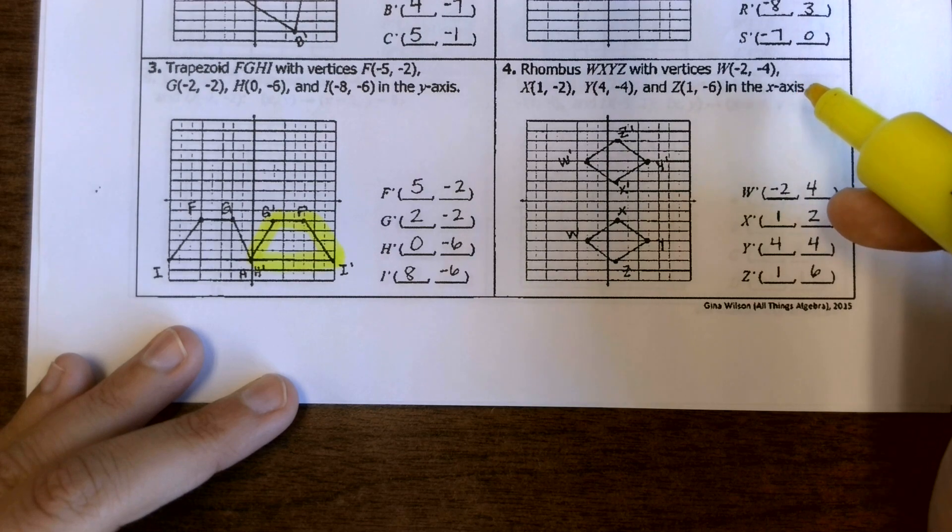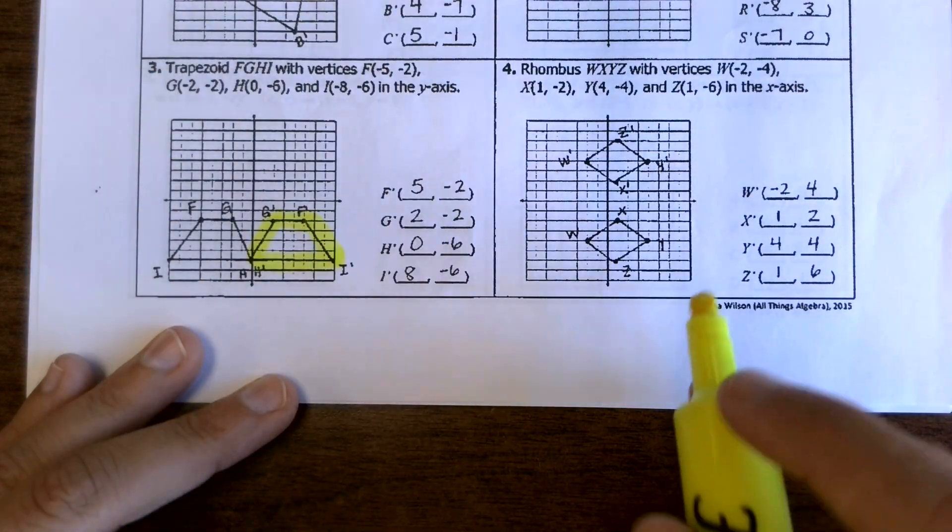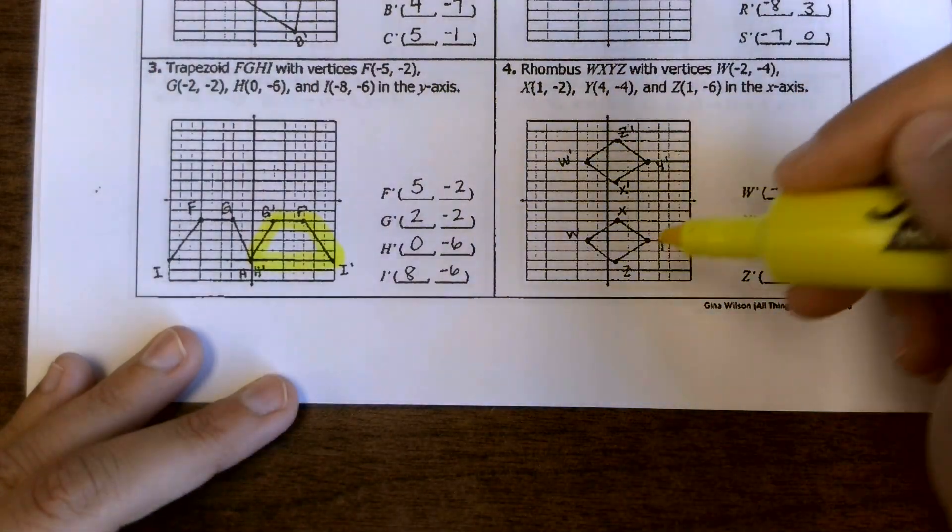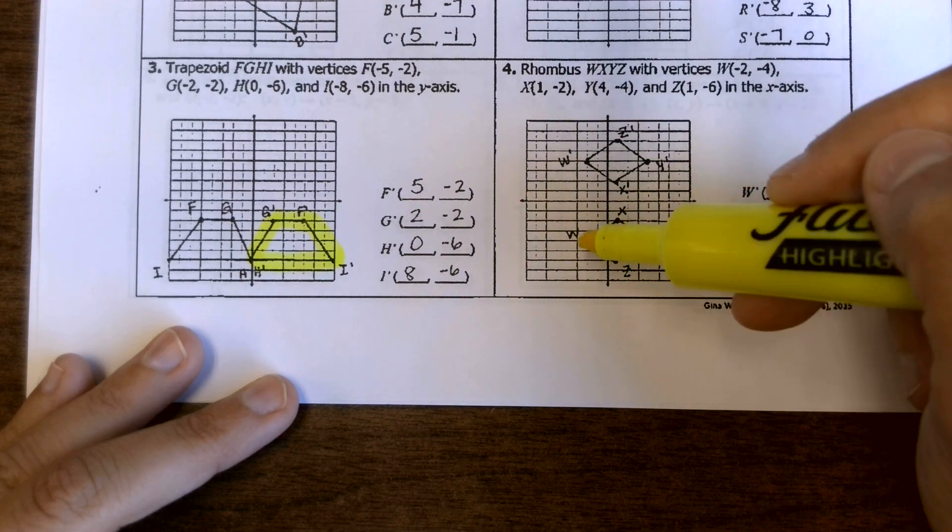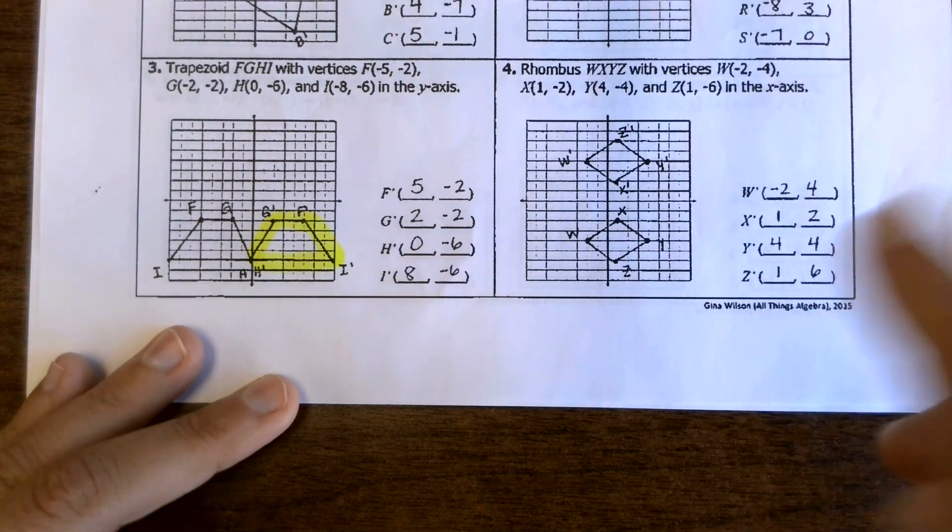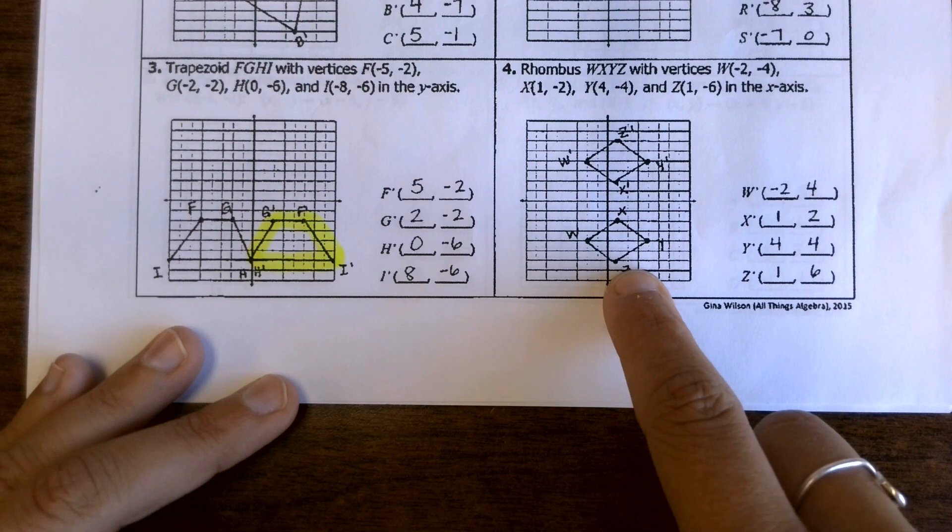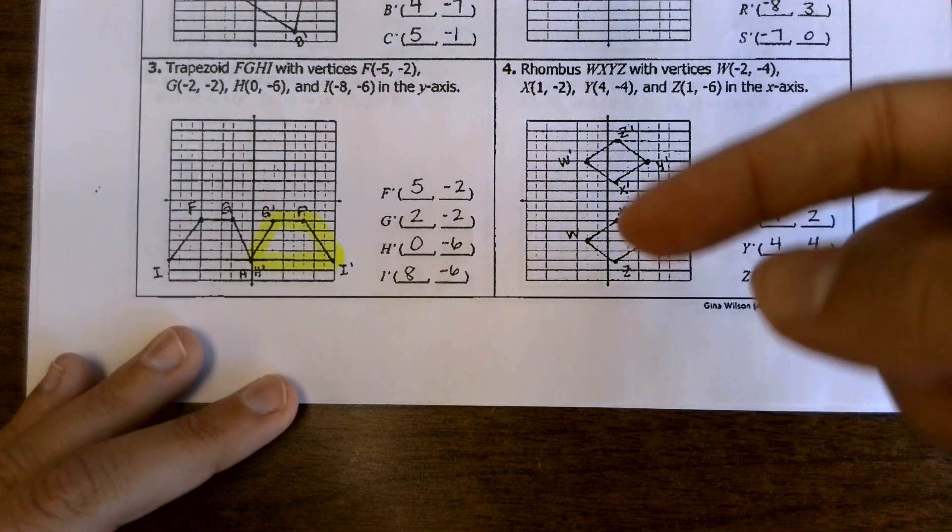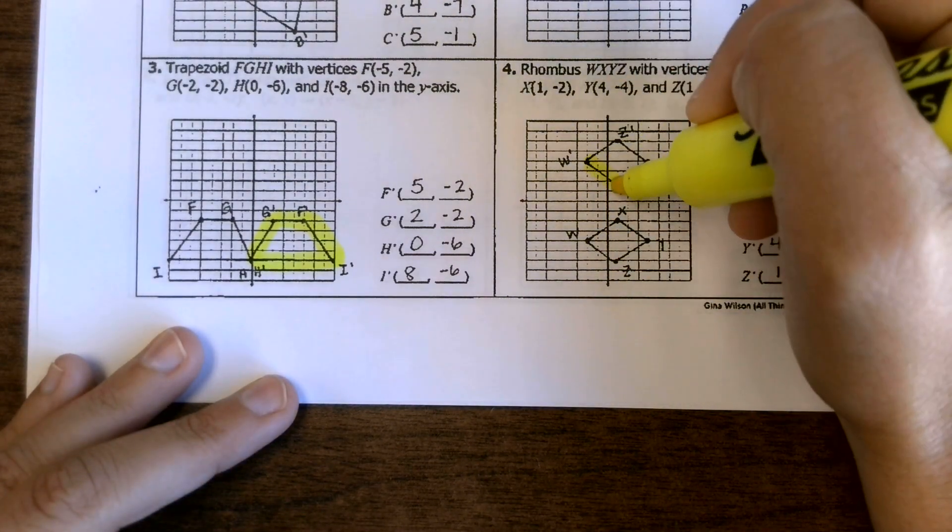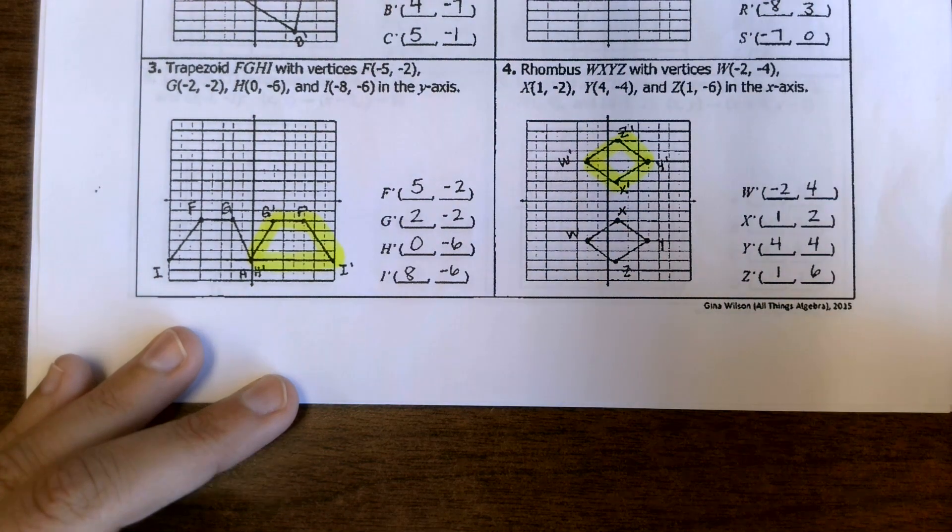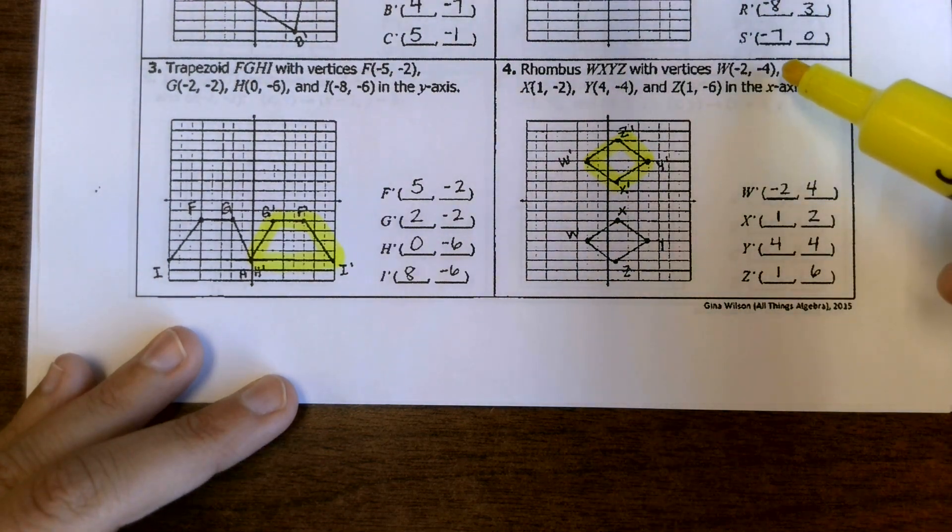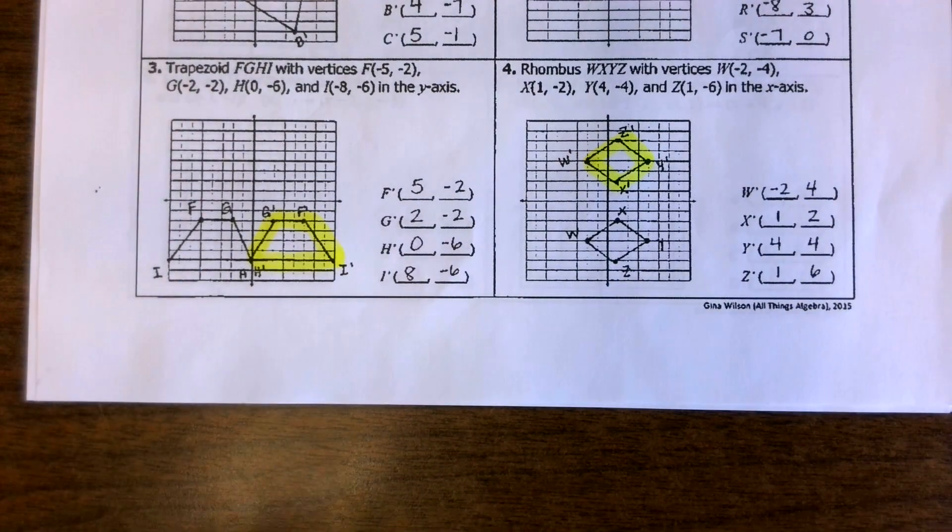And then for 4, this was in the x-axis, just like that first one. So we had our pre-image actually ended up being below the x-axis. So then our image ended up being above. All of those y-values changing from being negative to being positive since it got flipped up.